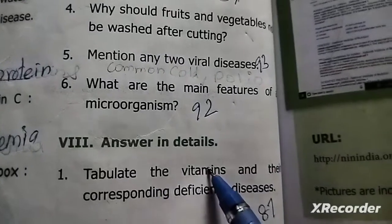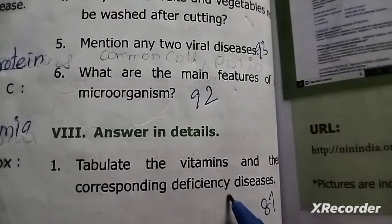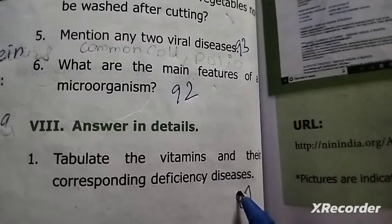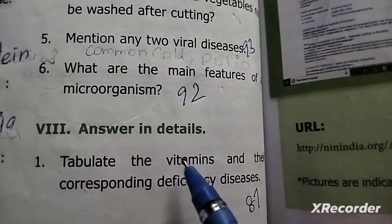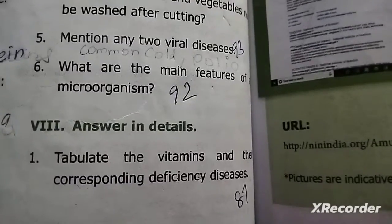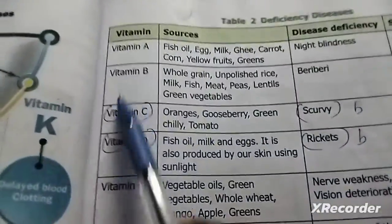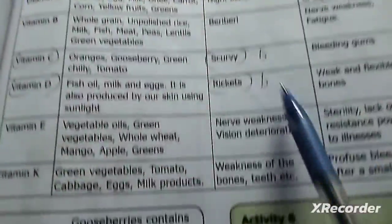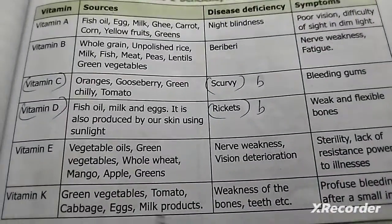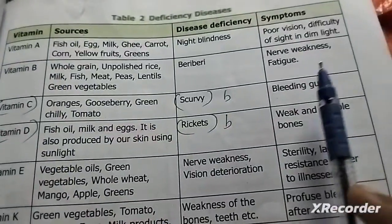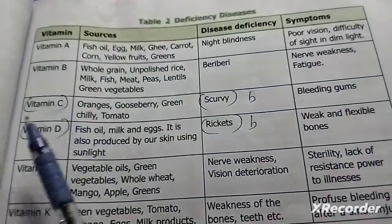Answer in detail: tabulate the vitamins and their corresponding deficiency diseases. The table includes vitamin names, their deficiency symptoms and diseases.